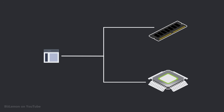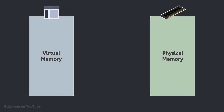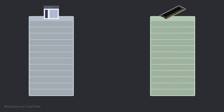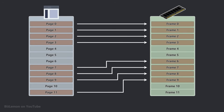Individual processes cannot access physical RAM directly. Instead, they operate on a virtual address space, which is mapped to the physical address space by the operating system. Both virtual memory and physical memory are divided into blocks of the same size, called pages and frames, respectively.